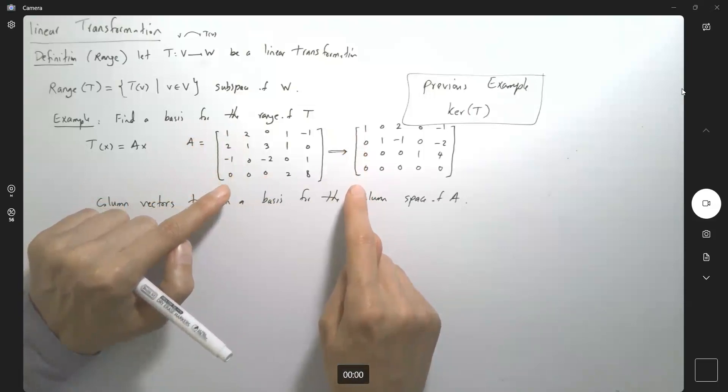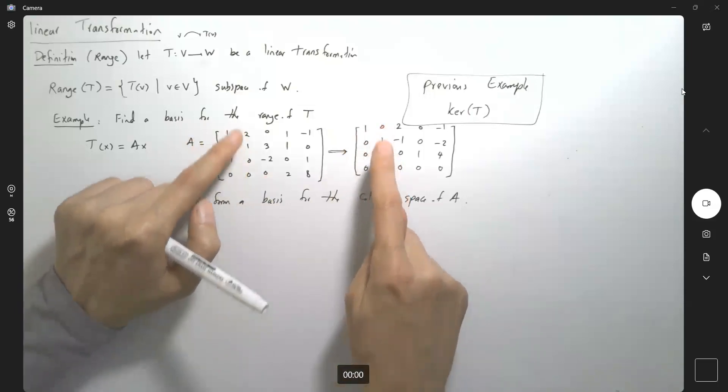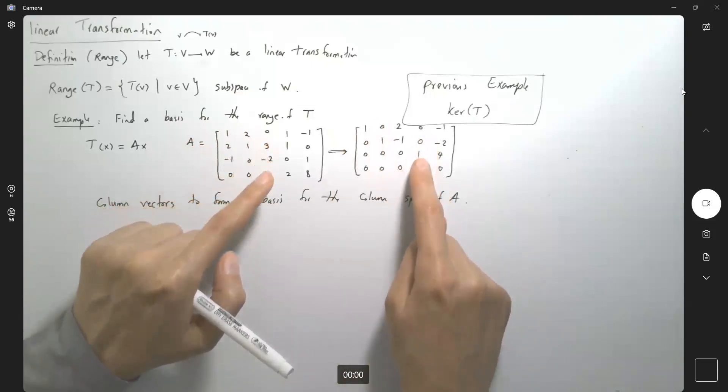The second column is associated to 2, 1, 0, 0, and finally what do we have here? We have this guy here.